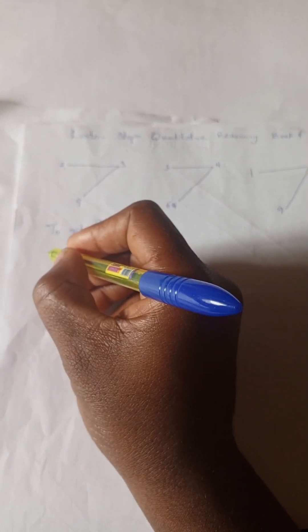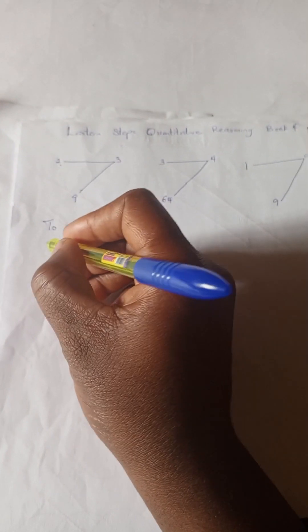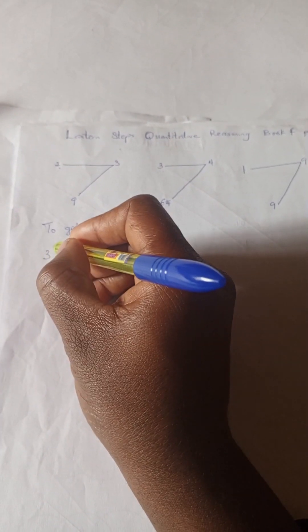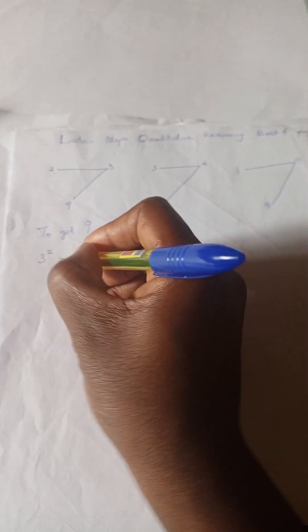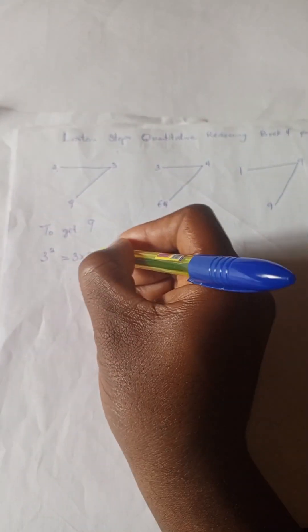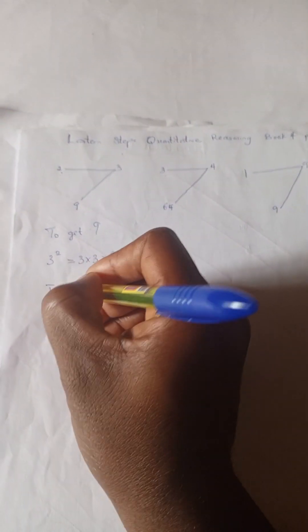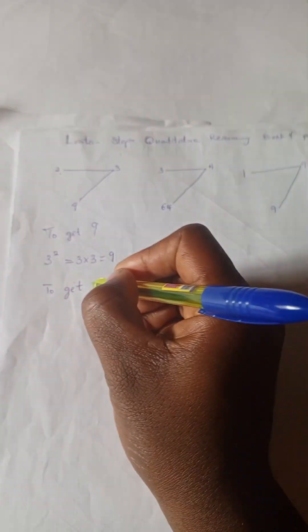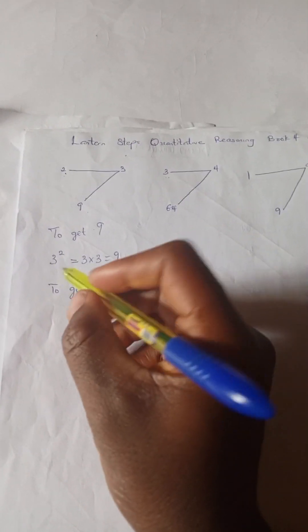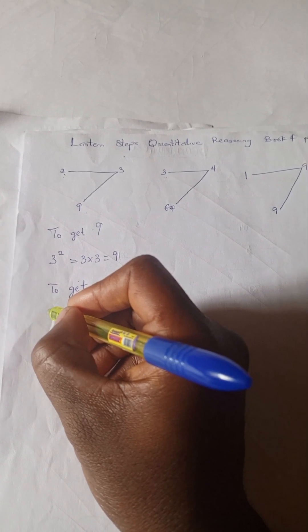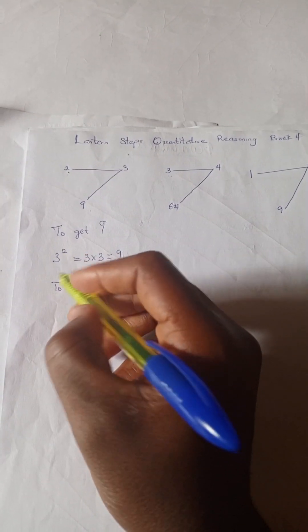So to get 9 we are going to have 3 to the power of 2 which is 3 times 3 equals 9.